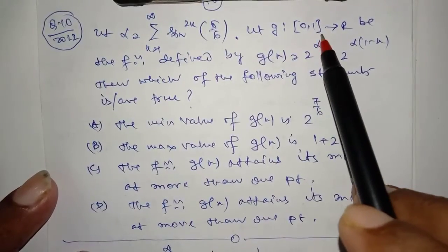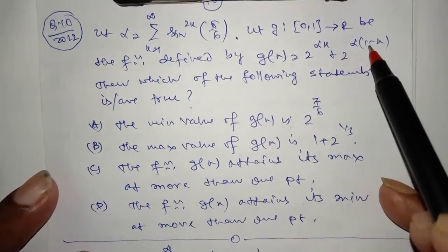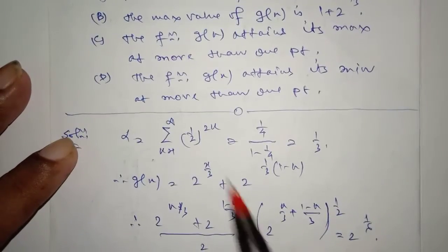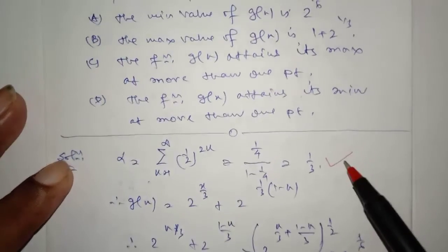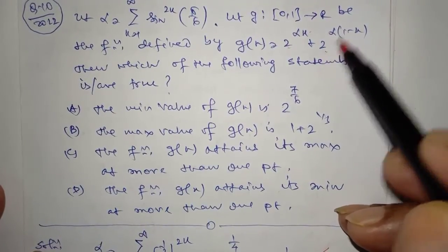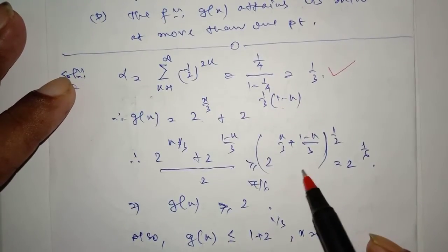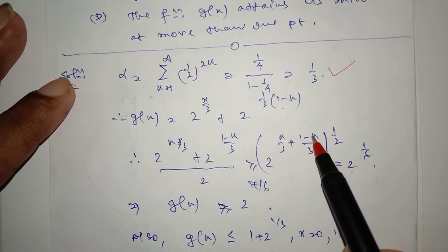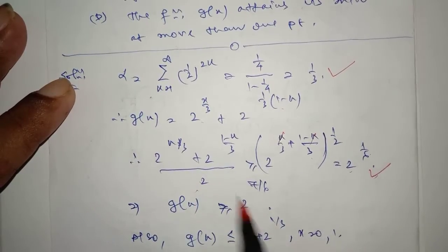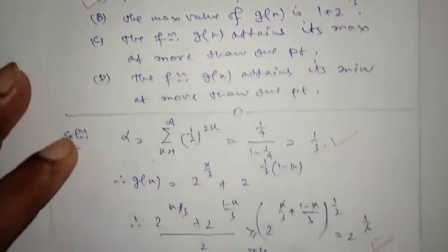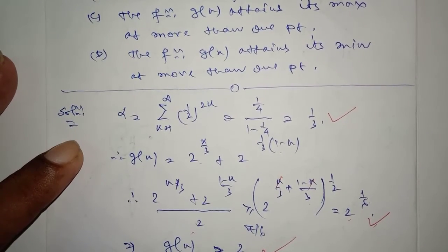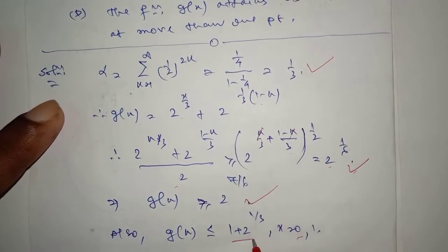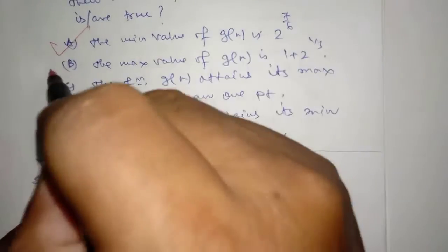Question 12: Let α be defined and g: [0,1]→ℝ be the given function. For sin(π/6) = 1/2 raised to power 2k, α = 1/3. Substituting, we get 2^(x/3) and 2^(1/3)·(1−x). Applying AM-GM inequality: minimum value is 2^(7/6). Also g(x) < 1 at x=0, and the result at x=1. Therefore option B (attains its maximum at more than one point) is the correct choice.